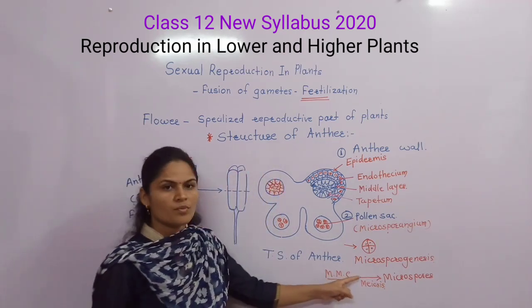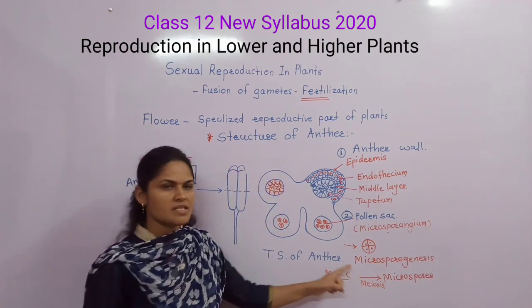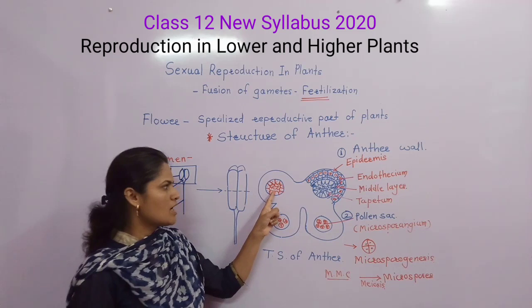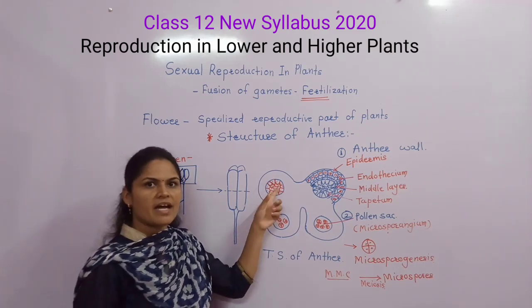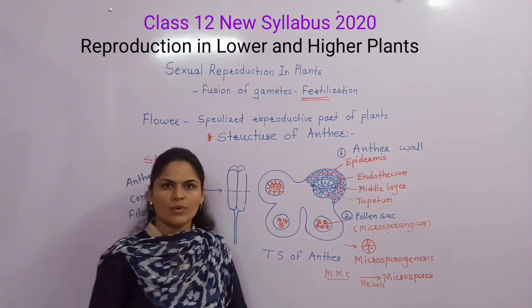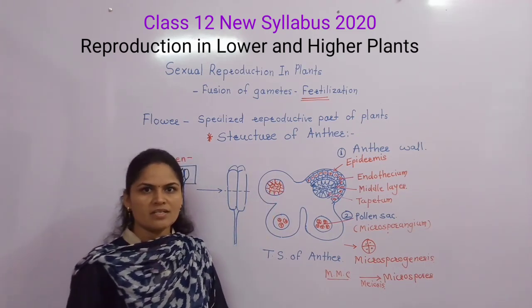Microsporogenesis means formation of microspores from the microspore mother cell by meiosis. The sporogenous cells act as microspore mother cells.